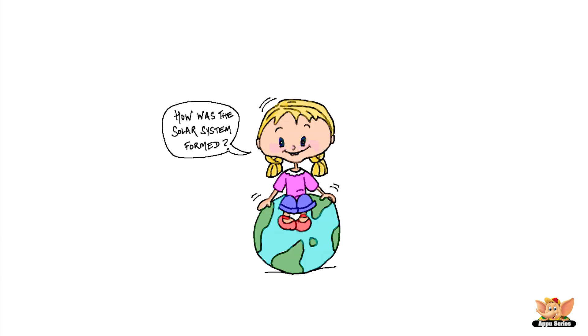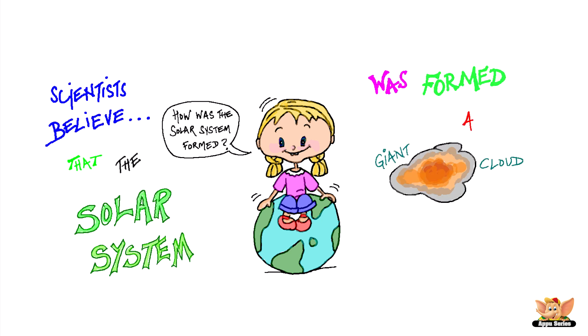How was the solar system formed? Scientists believe that the solar system was formed from a giant cloud of dust and gas.